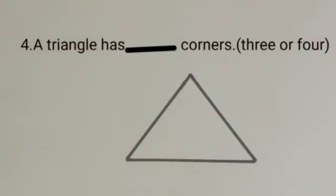Our next fill up is, a triangle has dash corners. And the options are, 3 or 4. Let's count its corner. 1, 2, 3. A triangle has 3 corners.